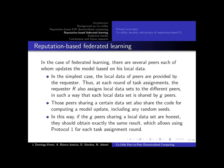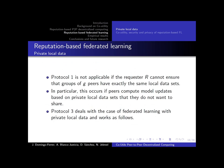For federated learning, in the simplest case, the local data of peers are provided by the requester. If that's the case, and the requester also provides any randomness used during training, then we can use Protocol 1 to ensure the correctness of the models computed by peers. However, if the data is not provided by the requester, but the peers use their locally private data, Protocol 1 is not suitable.